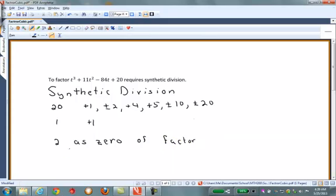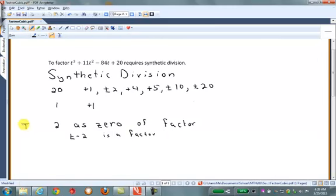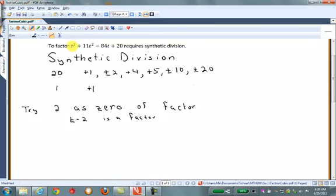In other words, it's to see if t minus 2 is a factor. Now, I don't know whether it is or not. We're just going to try, and we'll just say that this is a try. So here's how synthetic division goes. We take the coefficients. The t cubed coefficient is 1. The t squared coefficient is 11. The t coefficient is negative 84. And the constant coefficient is 20.